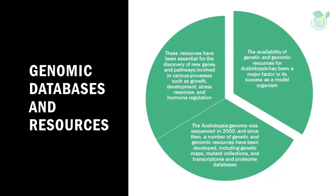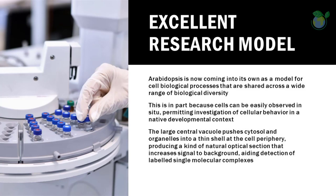Genomic databases and resources. The availability of genetic and genomic resources for Arabidopsis has been a major factor in its success as a model organism. The Arabidopsis genome was sequenced in 2000, and since then, a number of genetic and genomic resources have been developed, including genetic maps, mutant collections, and transcriptome and proteome databases. These resources have been essential for the discovery of new genes and pathways involved in various processes such as growth, development, stress response, and hormone regulation.